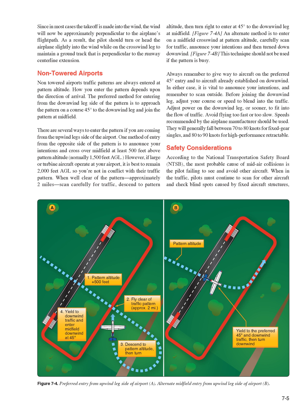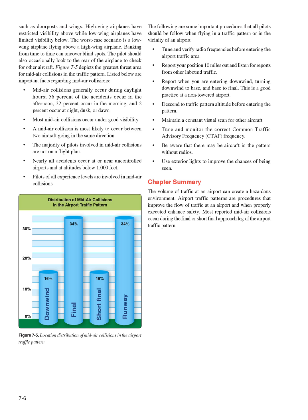Avoid flying too fast or too slow. Speeds recommended by the airplane manufacturer should be used. They will generally fall between 70–80 knots for fixed-gear singles, and 80–90 knots for high-performance retractables. According to the National Transportation Safety Board (NTSB), the most probable cause of mid-air collisions is the pilot failing to see and avoid other aircraft. When in the traffic pattern, pilots must continue to scan for other aircraft and check blind spots caused by fixed aircraft structures such as doorposts and wings. High-wing airplanes have restricted visibility above, while low-wing airplanes have limited visibility below. The worst-case scenario is a low-wing airplane flying above a high-wing airplane. Banking from time to time can uncover blind spots. The pilot should also occasionally look to the rear of the airplane to check for other aircraft.